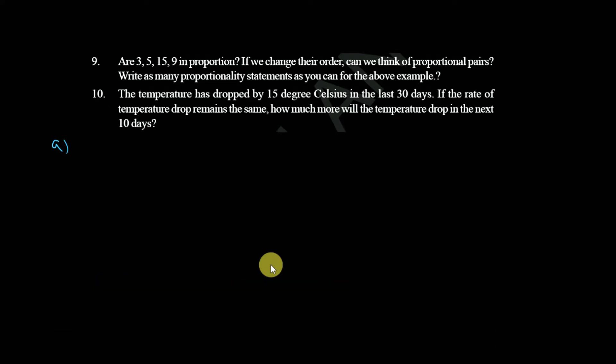So are they in proportion? We have to know if they are in proportion or not first of all. If you multiply the last two and first two we should know. So 3 into 9 will be equal to 15 into 5.